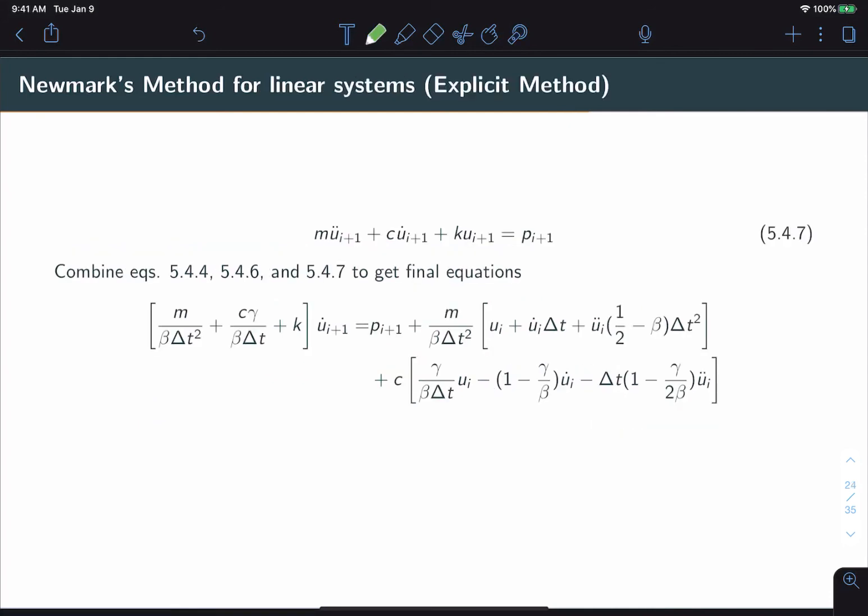The procedure from here on out is going to look very similar to the central difference method. We're going to start from the equation of motion again and plug our values of acceleration, velocity and displacement in. So plugging in those general equations, 5.44 and 5.46, we get the complex equation that you see here. In order to make things easier, we're going to try to simplify this and rearrange it.